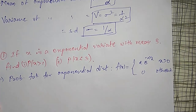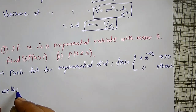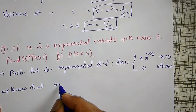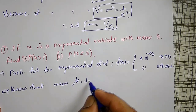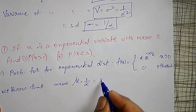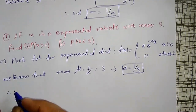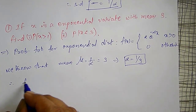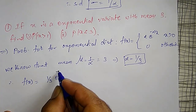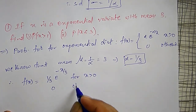What is α here? We know that mean μ = 1/α, and mean is given as 3. So 3 = 1/α, which gives α = 1/3. Therefore, the probability function is f(x) = (1/3) · e^(−x/3) for x > 0, and 0 otherwise.